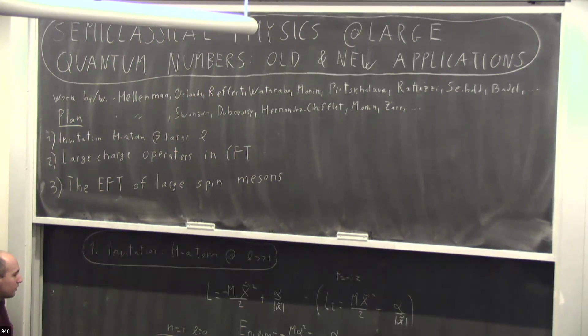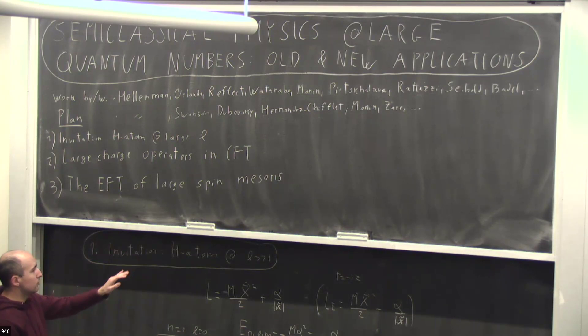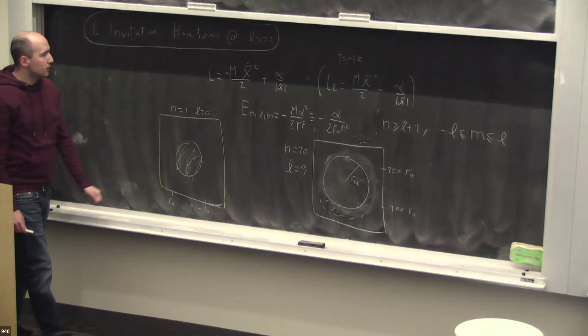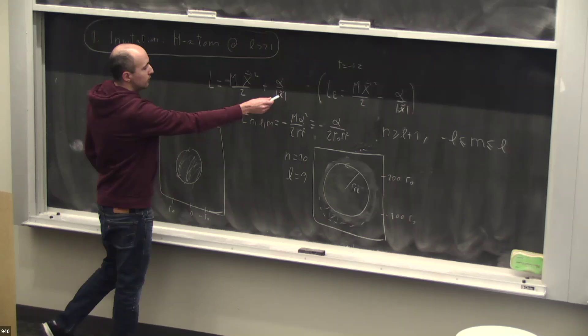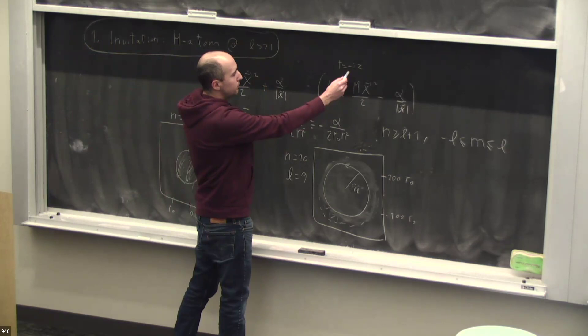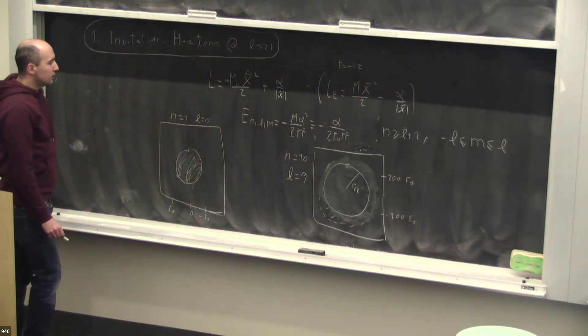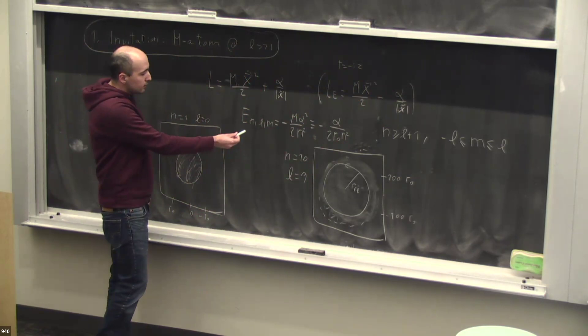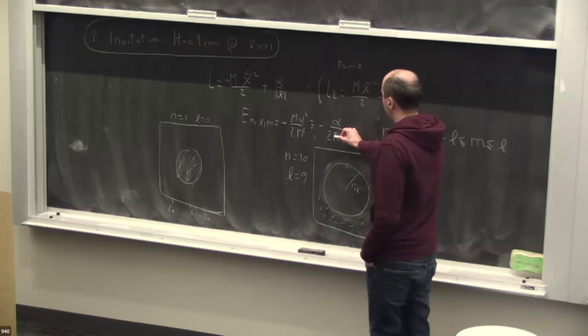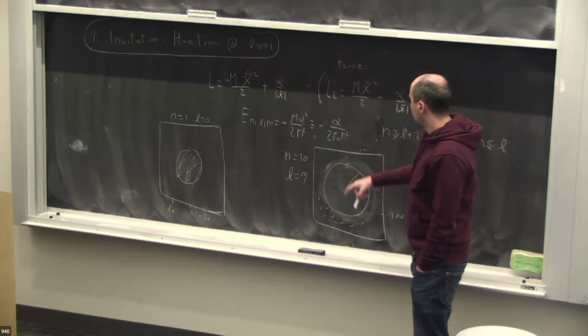Let me get started with something you probably are all familiar with, which is the hydrogen atom. I'm a field theory person, so I like Lagrangians. There's a Hamiltonian and a Lagrangian for the hydrogen atom in reduced coordinates — just one particle in a Coulomb potential. Since later I'll use the Euclidean Lagrangian, if you go to complexified time, the Lagrangian is the same with a minus in front of the Coulomb potential. The energy levels of bound states are m alpha squared over two n squared, or in units of the Bohr radius, divided by n squared.